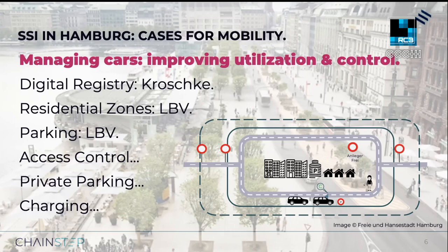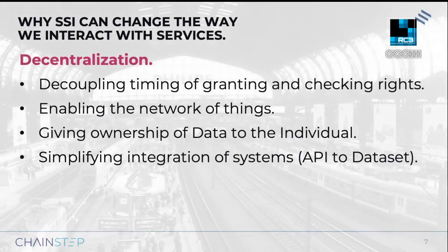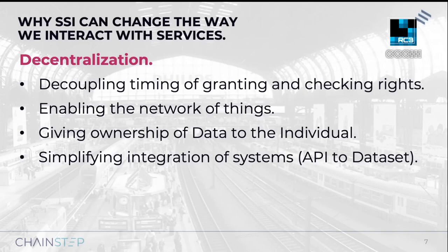The use case can be expanded to cover other services: access control for deliveries to Jungfernstieg, access to private parking facilities, or all the charging infrastructure being built in the city. SSI has the potential to change the way we interact with services. The keyword here is decentralization — SSI can decouple the timing of granting and checking rights. This enables edge communication: a network of things can decide whether a car is parked properly or a bus ticket is valid without interaction with a central system. It returns ownership of data back to the individual and simplifies system integration, as the user decides to share her data with the services she wants to use and trust.